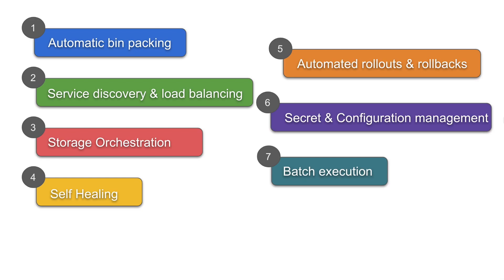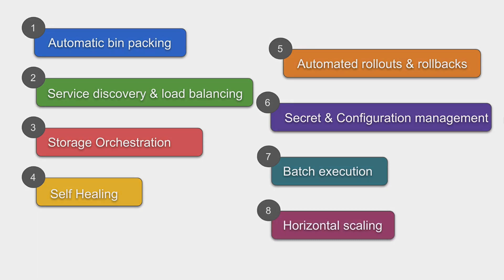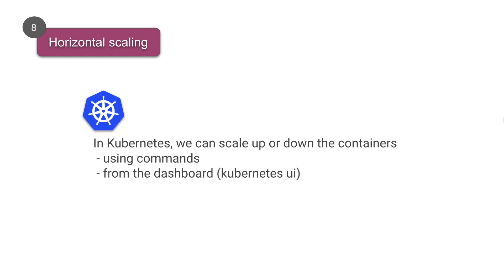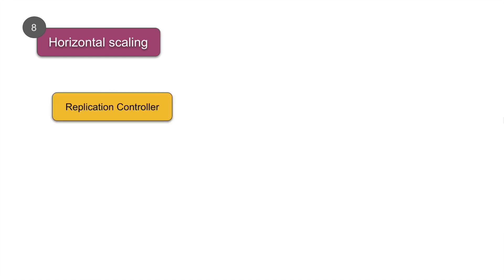The next feature is horizontal scaling. In Kubernetes, we can scale up and scale down containers. Scale up means to create more replicas of containers if required, and scale down means to terminate containers that are no longer needed. This scaling can be done using commands, using the UI or dashboard, or automatically based on CPU usage.